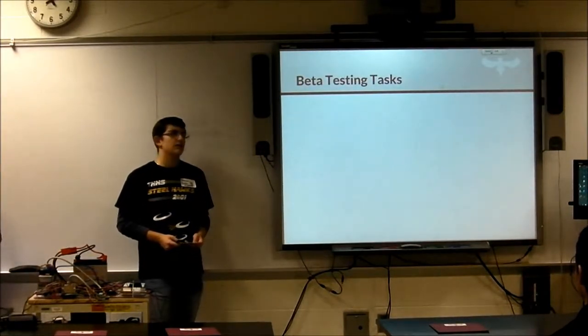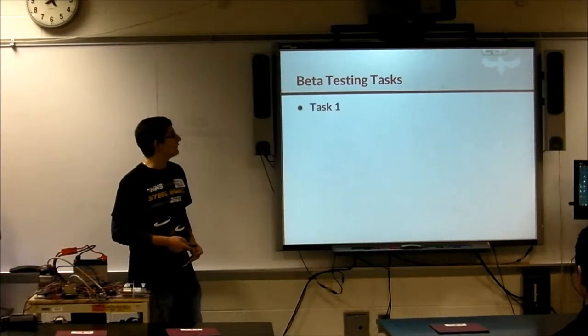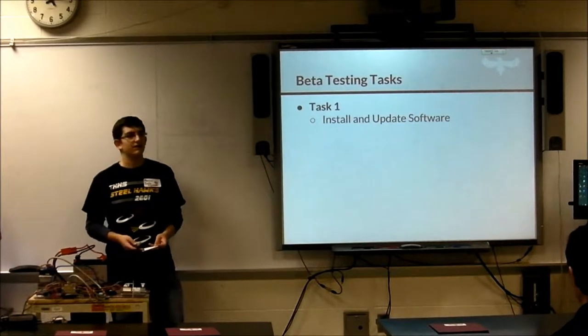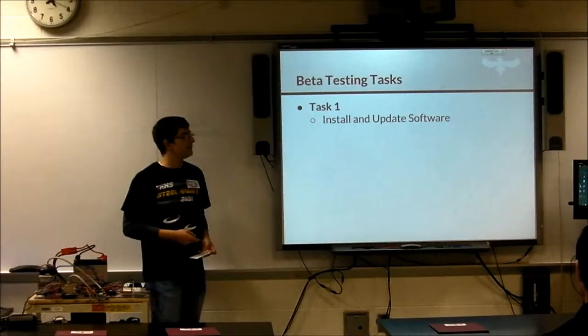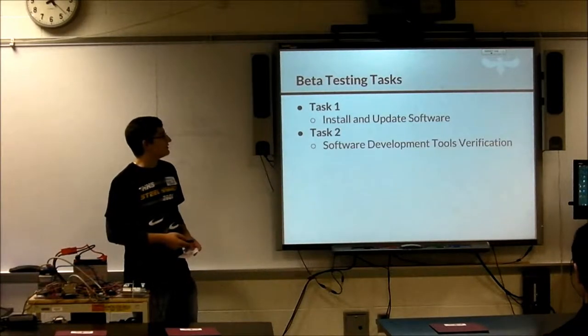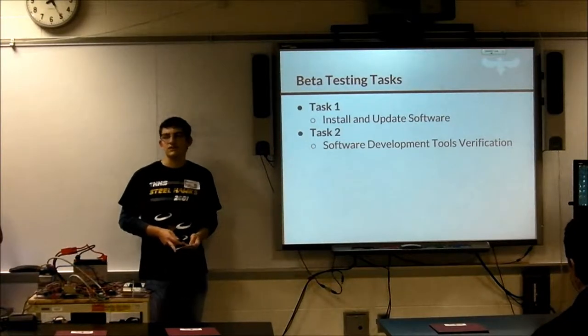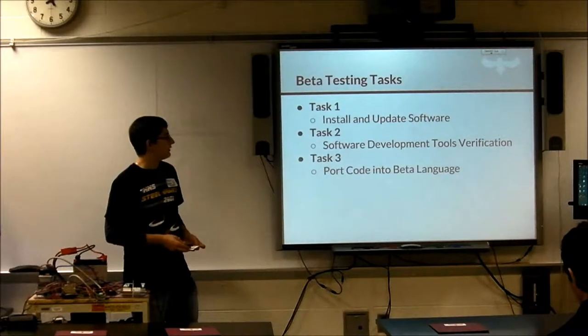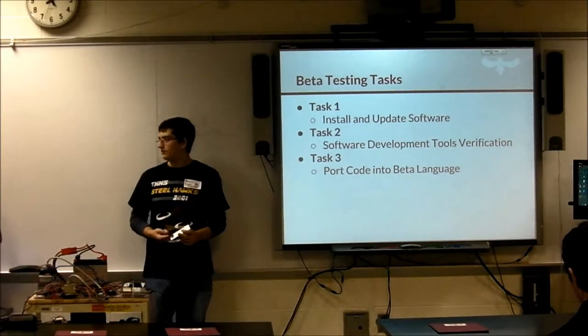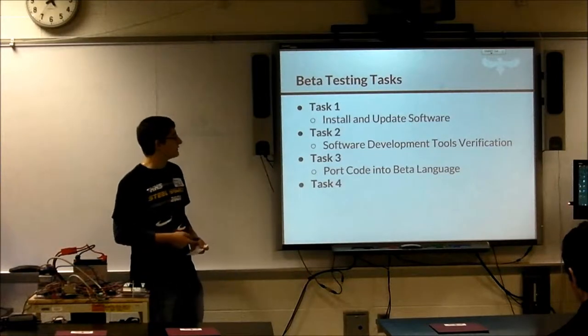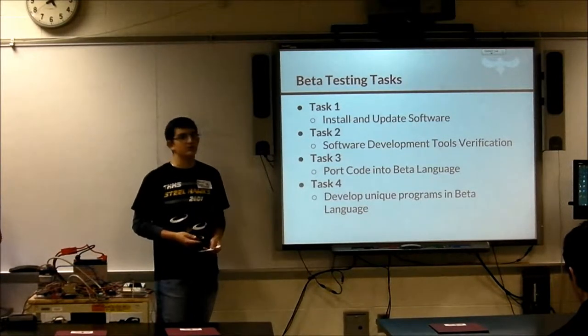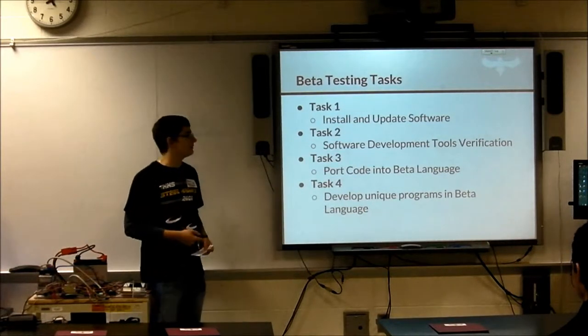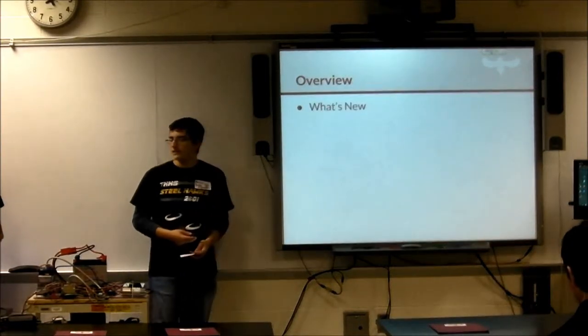The beta testing was divided into four tasks. The first task was to install and update all the new software: Java updates, the new Sunspot FRC SDK, and the new NI utilities. The second task was software development tool verification, basically making sure that everything from last year still worked. Task three was porting the code into the beta language, making sure everything recompiled properly and still worked. Task four was to develop programs in beta languages, using the new features and making sure all the old features still worked properly.